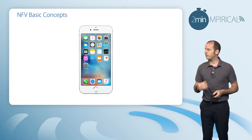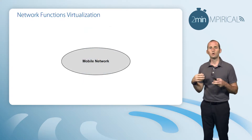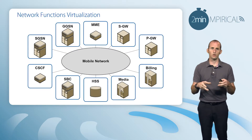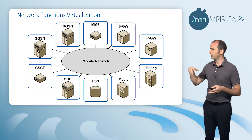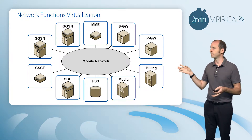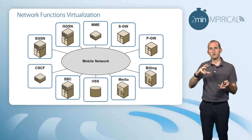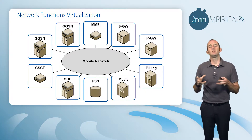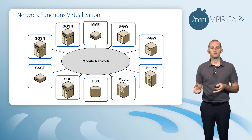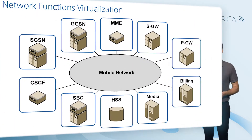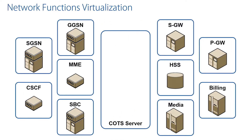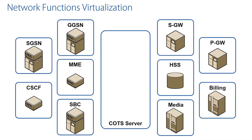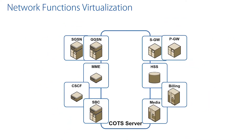Conceptually, if we map this to Network Functions Virtualization, here we've got a mobile service provider's network. If you look at that network, it's made up of a whole bunch of different network nodes — nodes from 2G, 3G, and 4G. They can be individual boxes or combined in some cases, but fundamentally we've got lots of different pieces of hardware performing different roles in the network. With Network Functions Virtualization, we take those roles and place them as a software process on a common piece of hardware, as you can see.